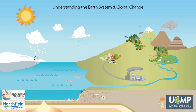Recently, especially in the last 200 years, humans have caused many changes to Earth's climate and ecosystems. To understand these changes, let's take a closer look at the parts of the Earth and how they interact to shape the world around us.